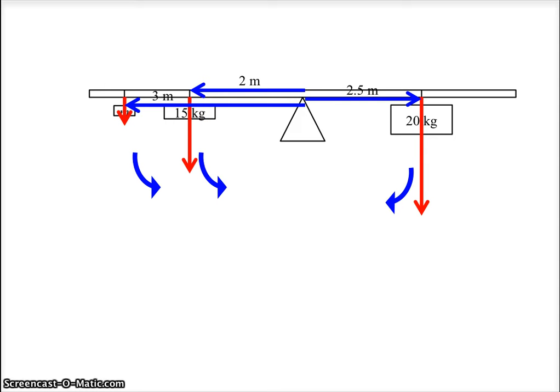So if the thing is in equilibrium, then we know the torque from this first mass, plus the torque from the 15 kilograms, plus the negative torque from the 20 kilograms, because it's clockwise. So you add a negative because it's clockwise. Putting the three together must be zero, because it is in rotational equilibrium. It's not moving at all.